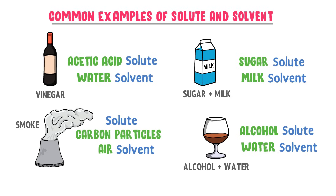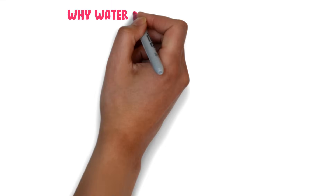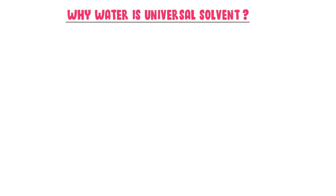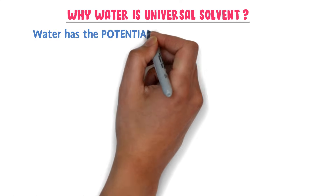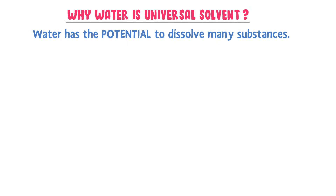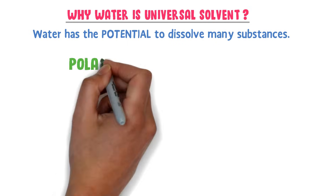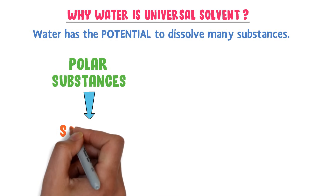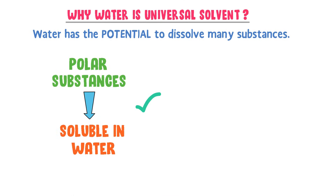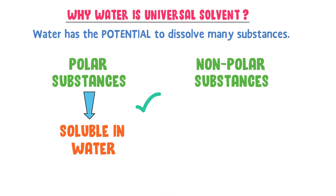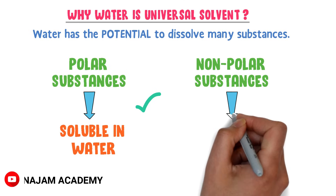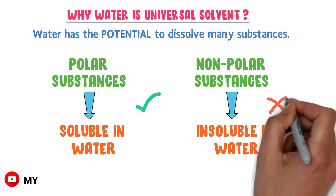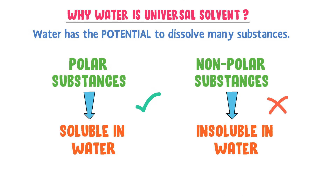Finally, let me give you a bonus tip. Why is water called a universal solvent? It is because water has the potential to dissolve many substances. But remember that only polar substances or polar solutes are soluble in water. Nonpolar substances or nonpolar solutes are not soluble in water. So water is therefore called a universal solvent.